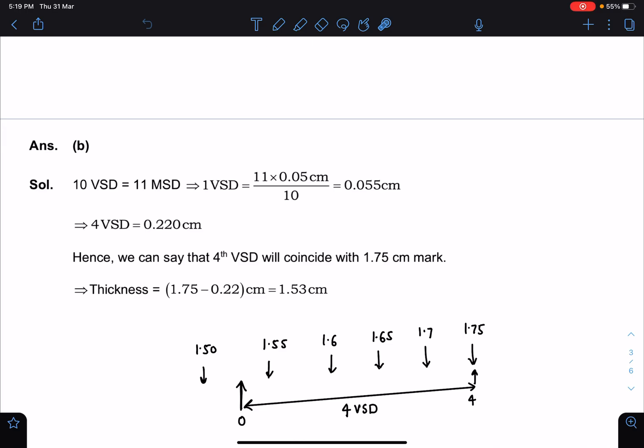So I will request you again that whenever modified verniers are given and they are not standard verniers, in that situation we must use the basic concept of length measurement and not the formula of vernier calipers. So there is some learning in this question, and a lot of such problems have come in mains and advance in previous years, so it's very much possible that this year also you'll be seeing some problems from this.